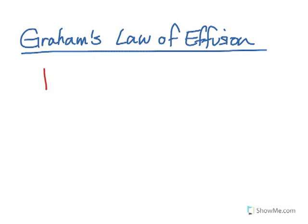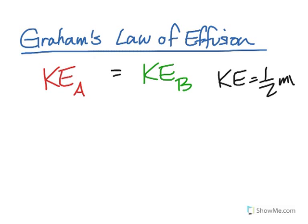So if I had gas A and gas B in the same container at the same temperature, that means the average kinetic energy of A should equal the average kinetic energy of B. Now from our kinetic theory of matter, we know that the kinetic energy equation is one-half m v squared. So let's substitute that equation into both of these kinetic energies.